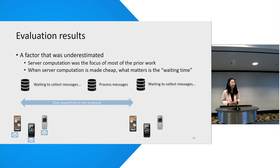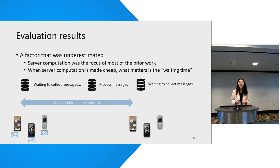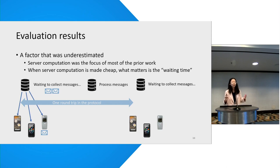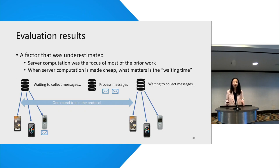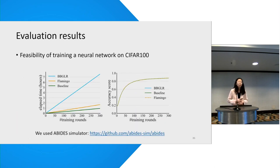Finally, I'll touch on evaluation results. Server computation is the main focus of most prior work, but we show that what actually matters is the number of round trips. The server selects a set of clients, asks them to send messages, and waits a fixed amount of time until it gets a desired fraction of messages — say from 99% of clients — then processes them. This is one round trip. Because server computation time to process messages has been made quite small by our work and prior work, what actually dominates is the round trips. From the left figure, the reduction in this complexity gives us a five to six times improvement over prior work, and we have almost no accuracy loss compared to the non-private baseline.